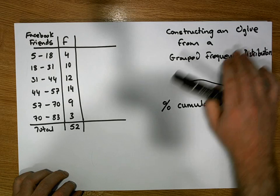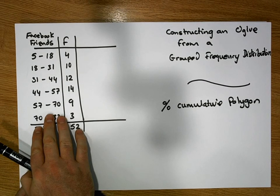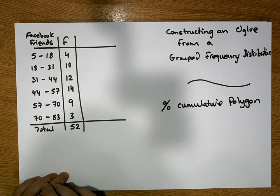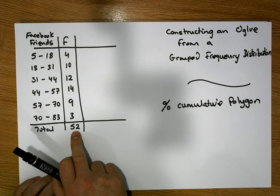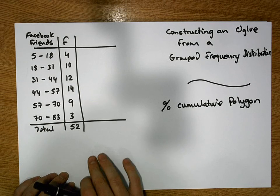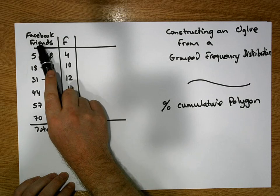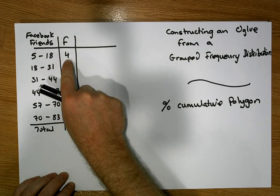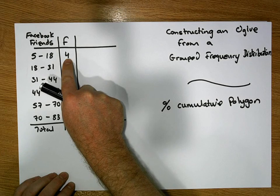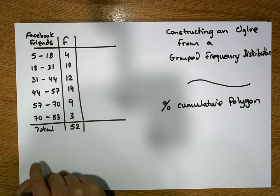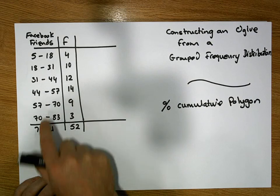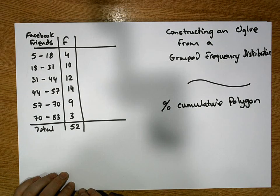So to be able to construct an ogive we need to have a grouped frequency distribution. This grouped frequency distribution represents the results of a survey of 52 respondents. And each respondent was asked how many Facebook friends they had. The first 4 respondents indicated that they had between 5 and 18 friends. 14 respondents indicated that they had between 44 and 57 friends and so on and so forth.